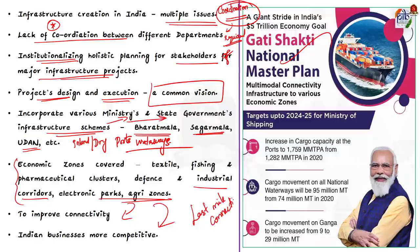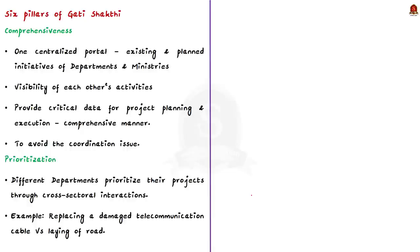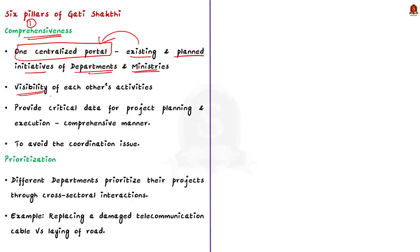Let us see the six pillars of this program. The first pillar is comprehensiveness. PM Gati Shakti will include all existing and planned initiatives of various ministries and departments with one centralized portal. Each department will now have visibility of each other's activities, providing critical data for planning and execution of projects in a comprehensive manner. This is going to avoid the coordination issue we saw earlier.